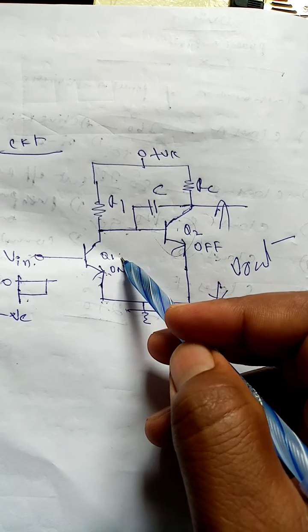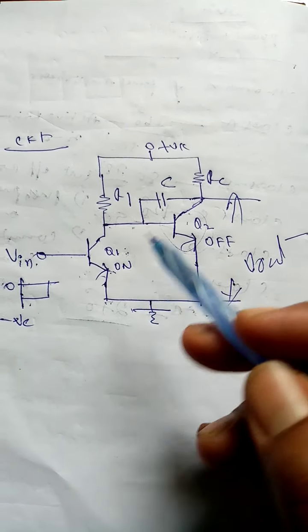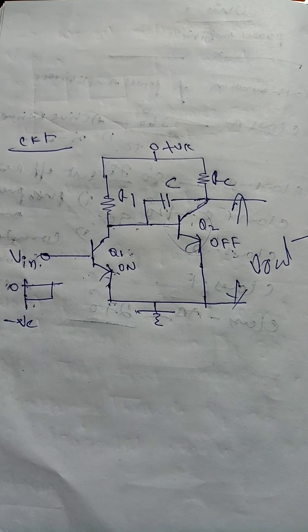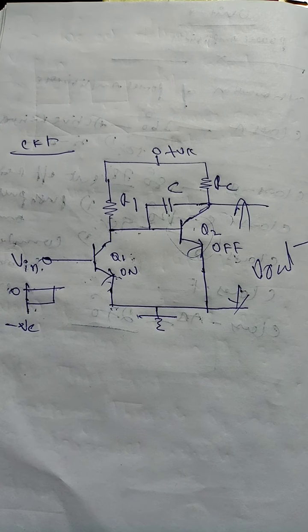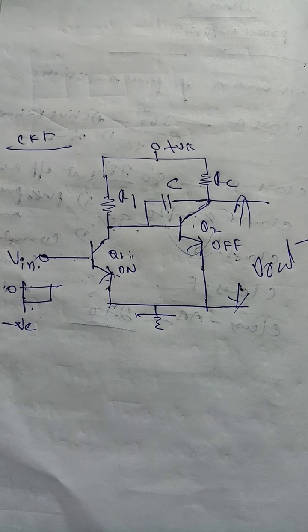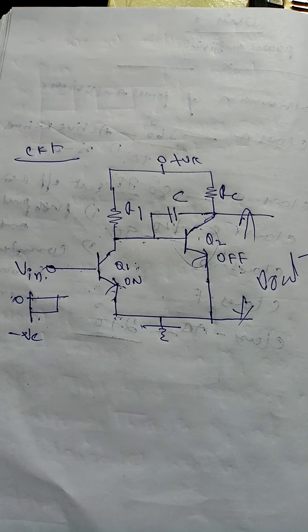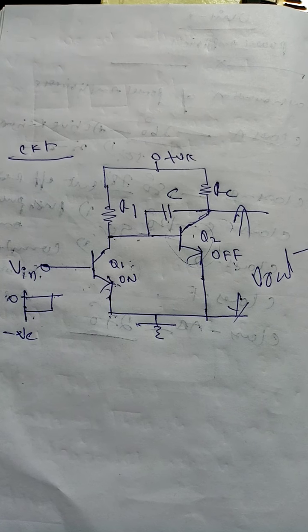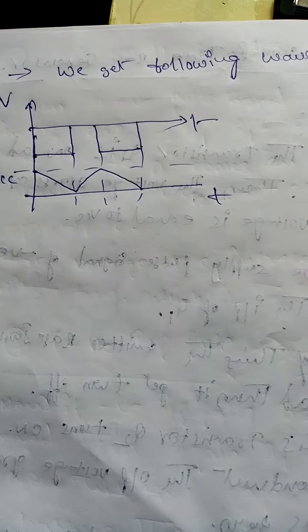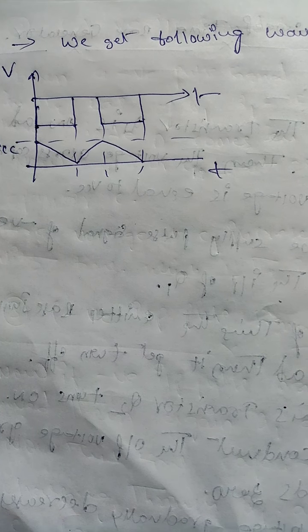When Q1 turns on, capacitor C charges up to VCC through RC. The time constant tau is equal to R1 times C1. Now let's look at the output waveform of this Miller sweep circuit — this is the passive circuit output waveform.